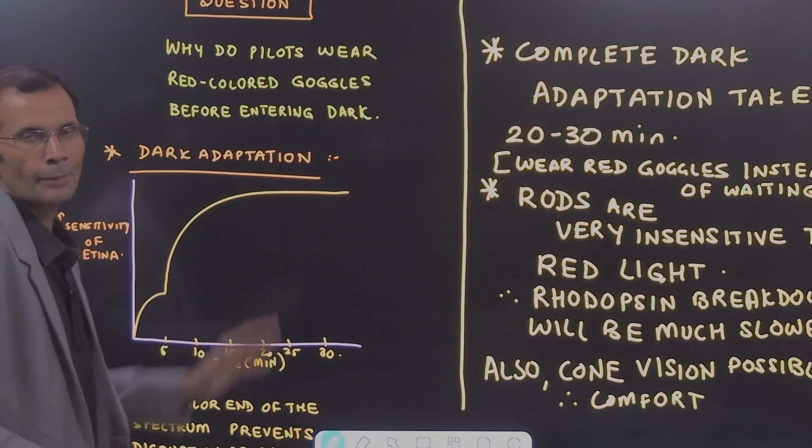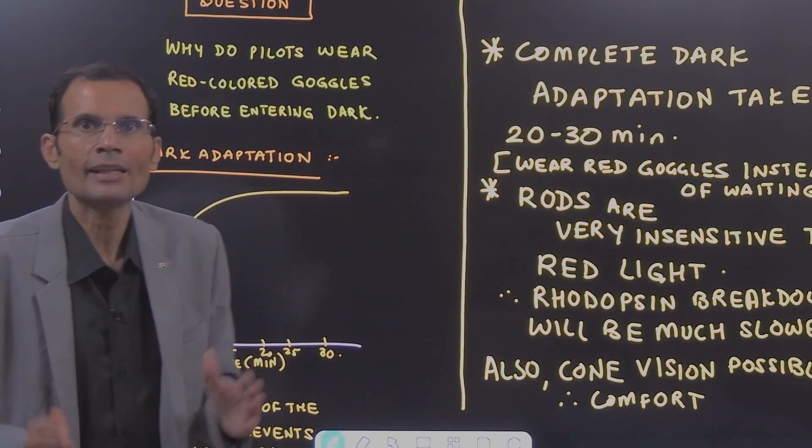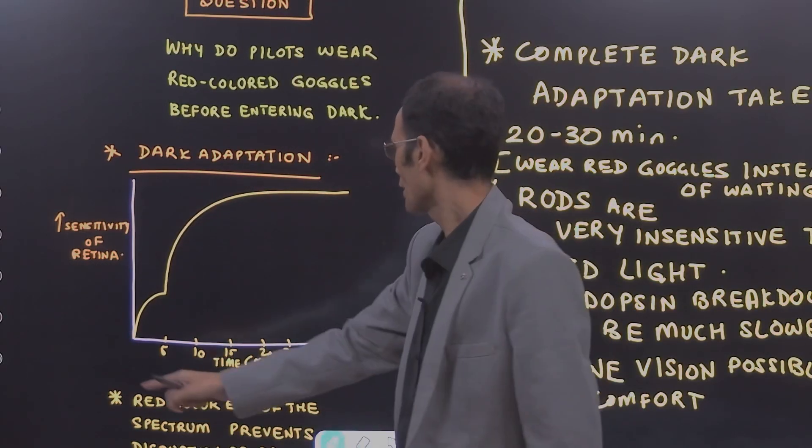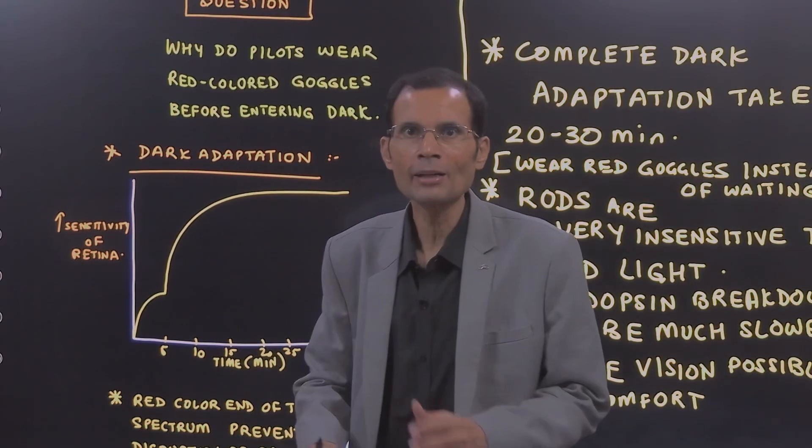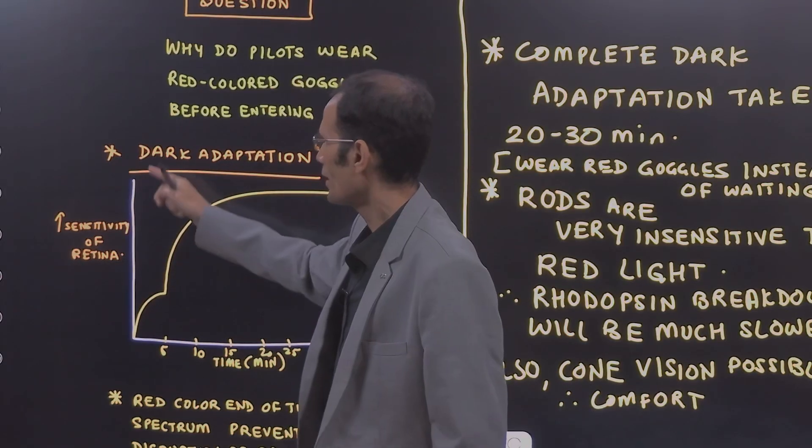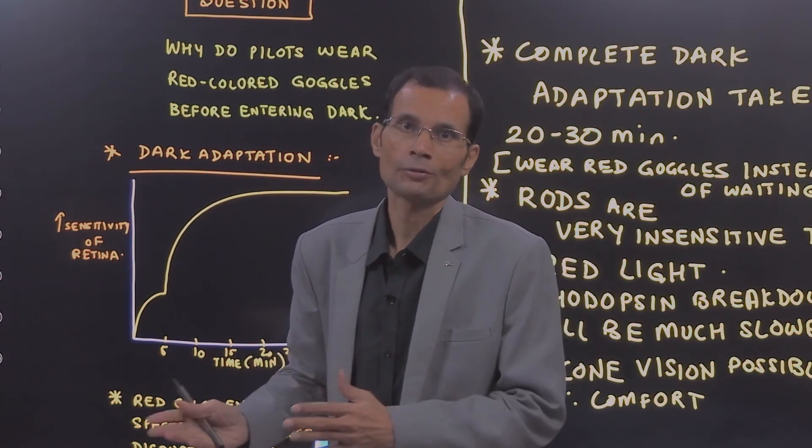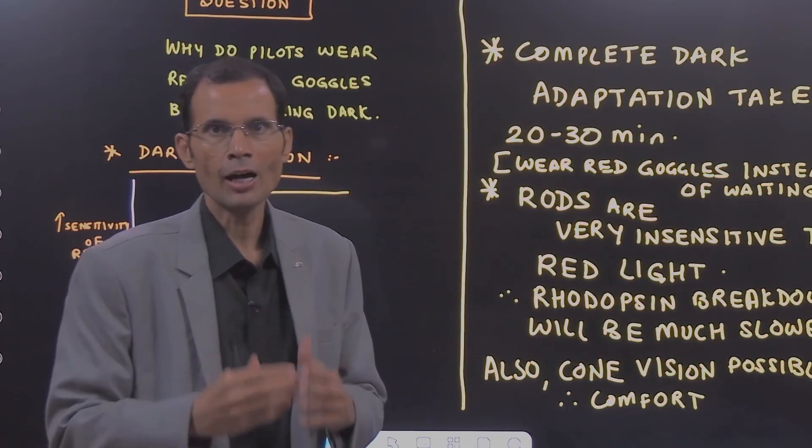Rods are involved in the dark adaptation and what actually happens is there is increased sensitivity of the retina. In about 25 minutes time, the retina sensitivity increases by 25,000 fold. That is how we adapt to the darkness.